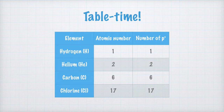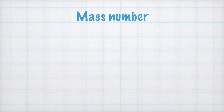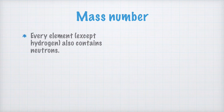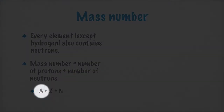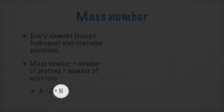Now, from the atomic number, we move on to the mass number. Every atom, except for hydrogen, also contains neutrons. The mass number tells us how many protons and neutrons there are together. Sometimes it's written like this: A equals Z plus N, where A is the mass number, Z is the number of protons, and N is the number of neutrons.